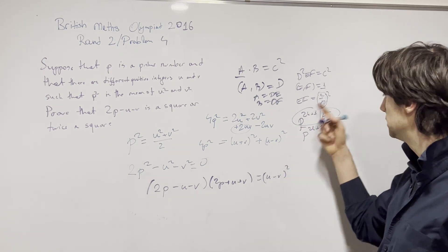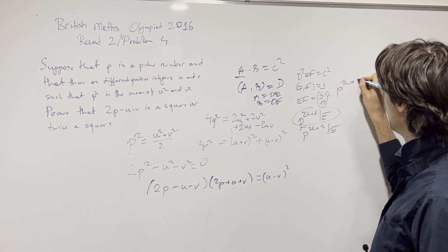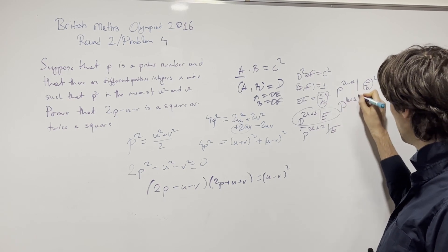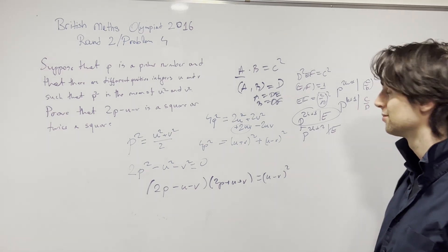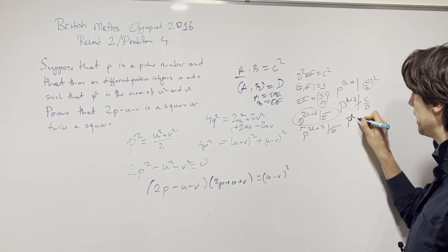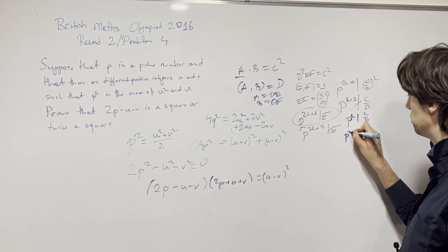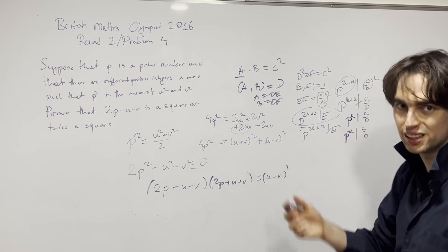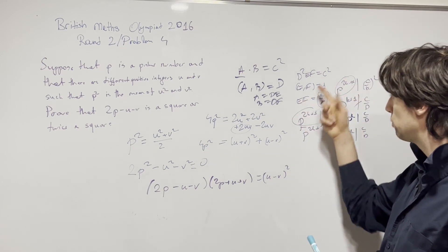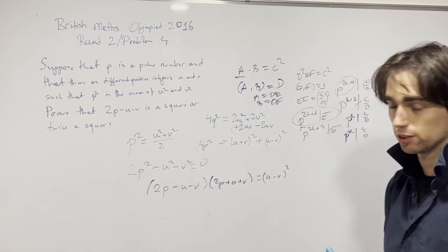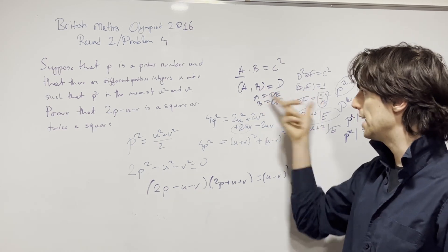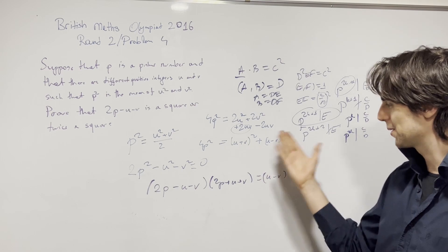To see why: assume p^(2k+1) divides e but p^(2k+2) does not. This would be a contradiction of e being a square, because then p^(2k+1) divides (c/d)², implying p^(k+1) divides c/d, leading to a contradiction. So if gcd = 2, then a is 2 times a square and b is 2 times a square. That is probably how we're going to solve this.